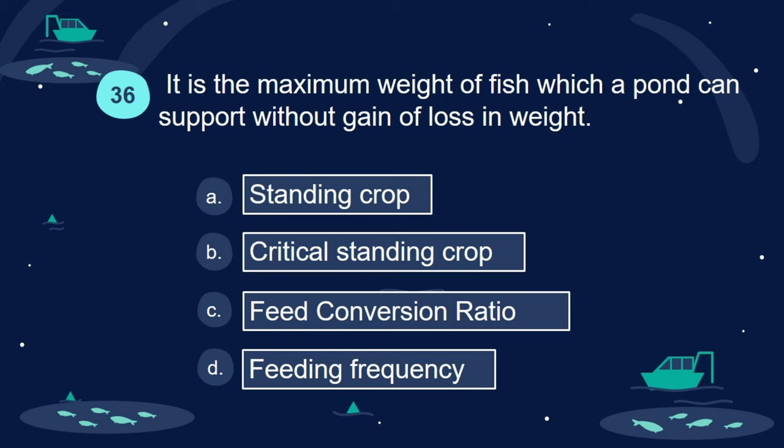Question 36. It is the maximum weight of fish which a pond can support without gain or loss in weight: A. Standing crop. B. Critical standing crop. C. Feed conversion ratio. D. Feeding frequency.